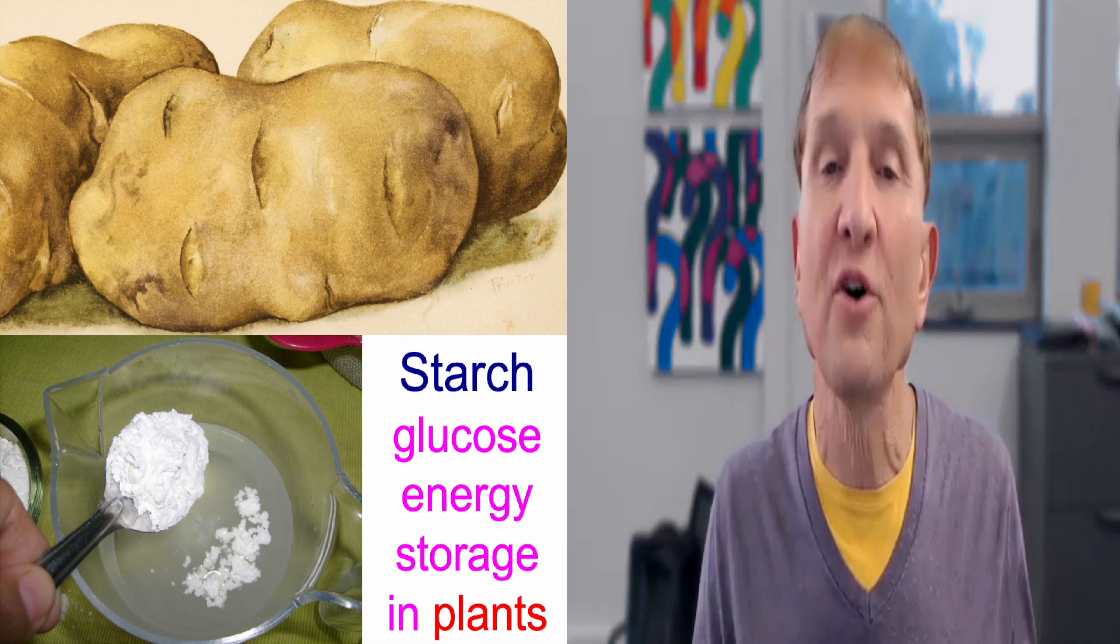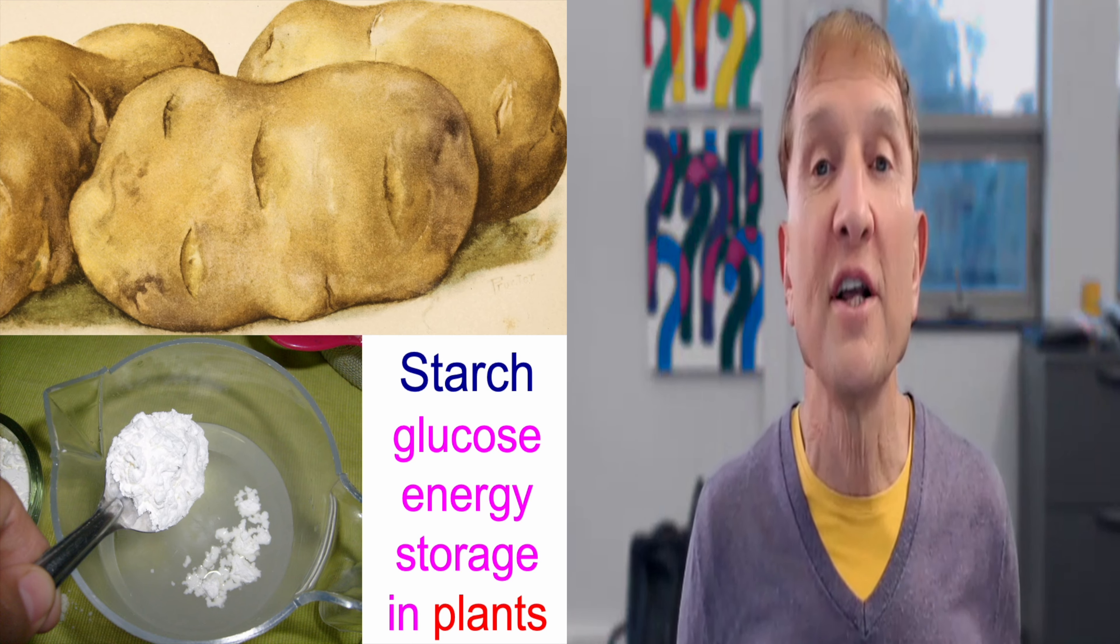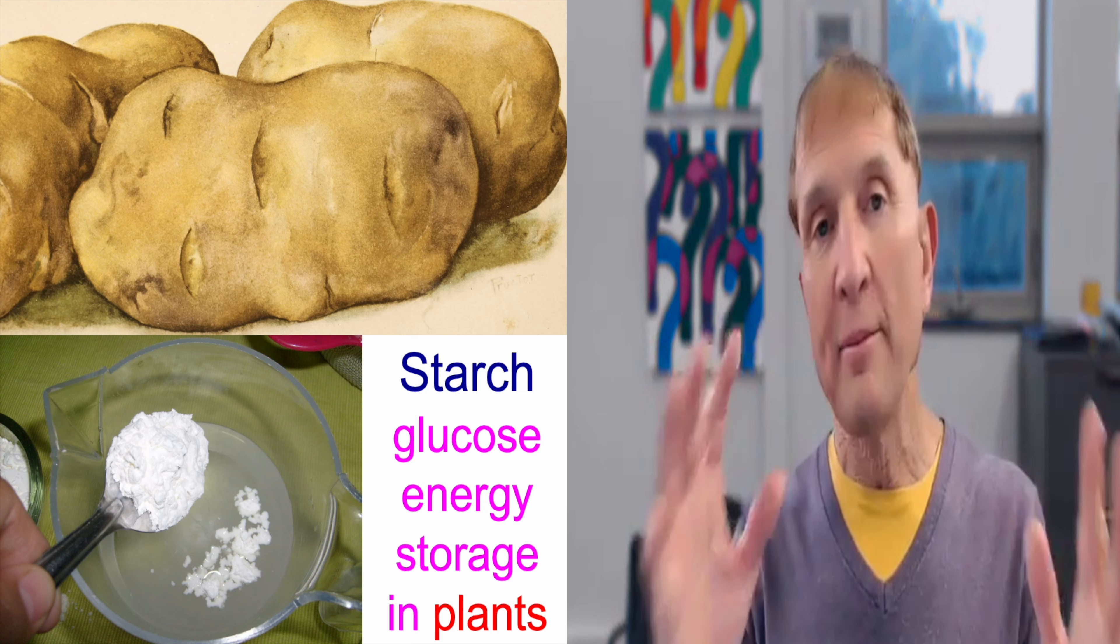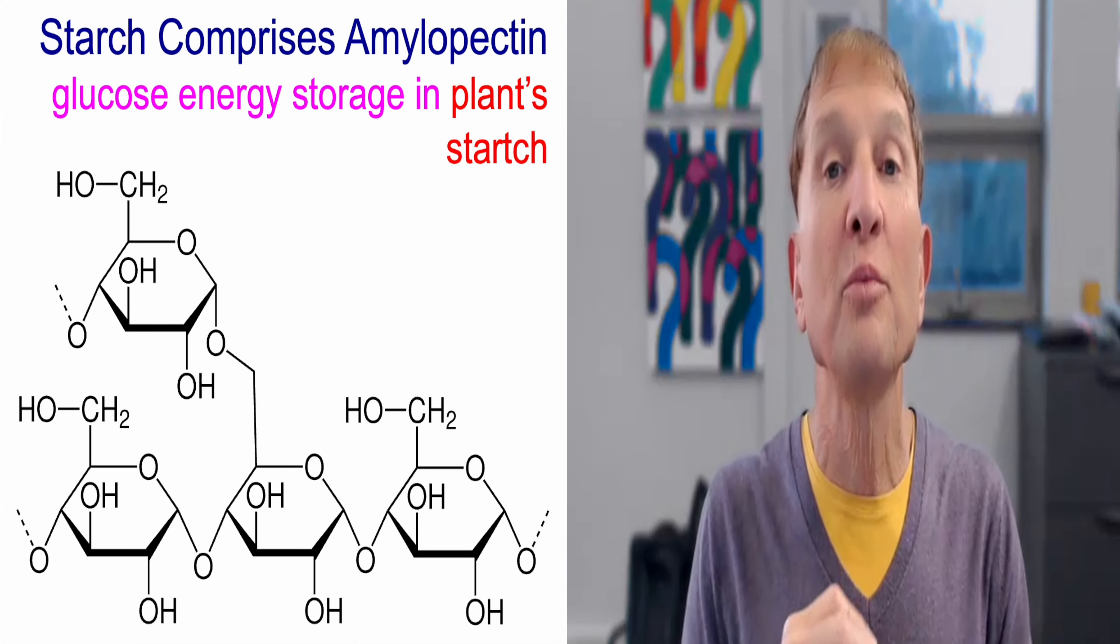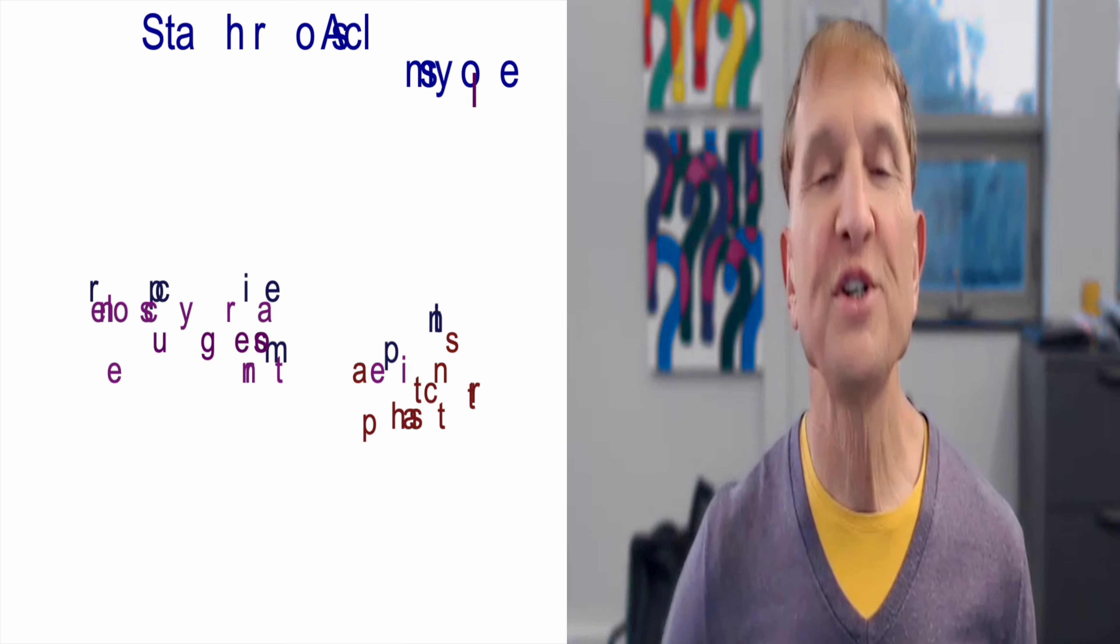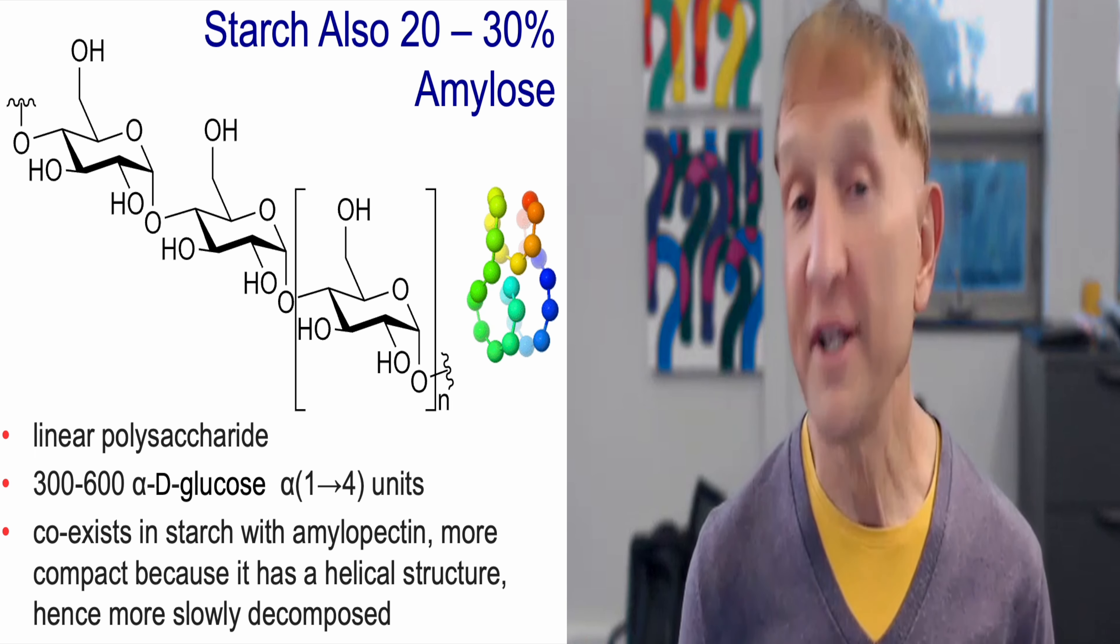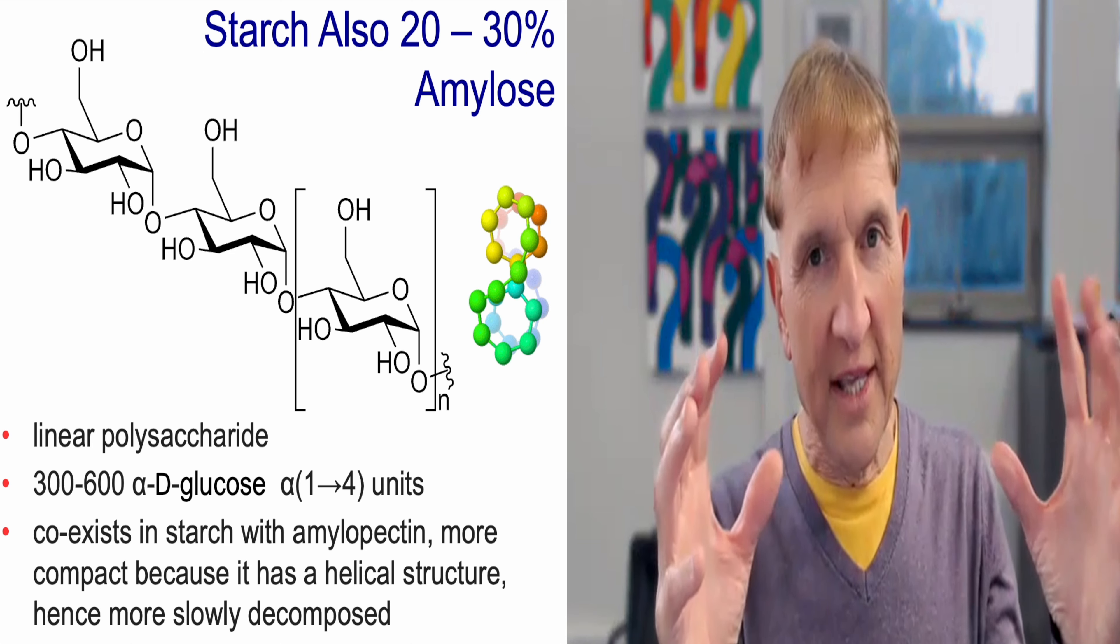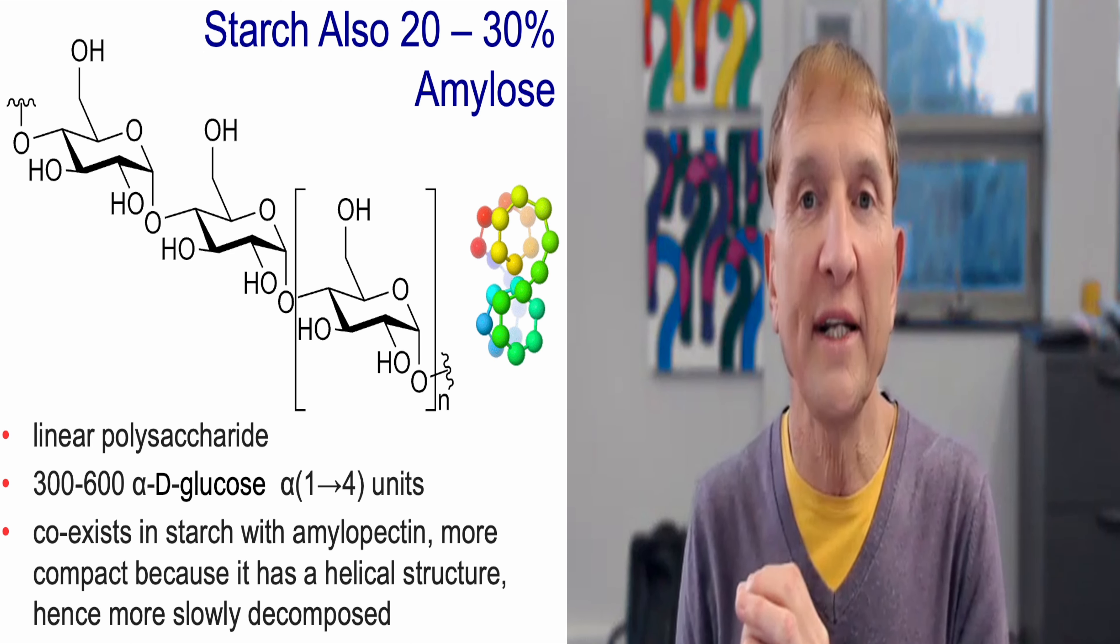So when plants photosynthesize and they want to put energy in the bank, they store it as starch. Starch is the combination of amylopectin, which is a branched polysaccharide comprising totally of glucose and of amylose, which is a linear polyglucose polysaccharide. So the plant is packing glucose in this more condensed form and storing it away for when it needs it.